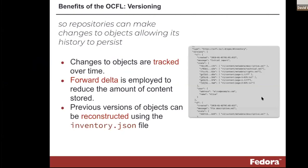OCFL does have a strong sense of versioning, and it does it in a way called forward delta. Whenever you create a new version of an object, at the OCFL layer where the actual files and folders are stored, you get a new version directory, but only the files that have changed between versions actually get created in this new folder. Files that haven't changed between versions stay in their original version folder, and the inventory file can reconstruct the complete object. It's a way of saving space and deduplicating.